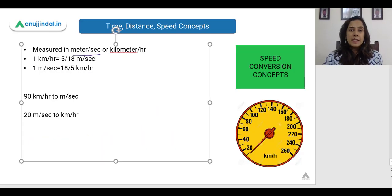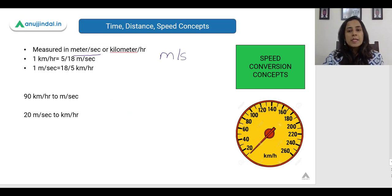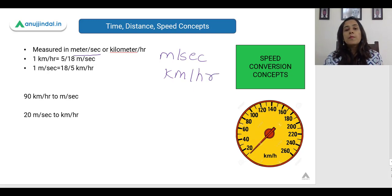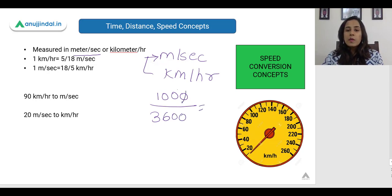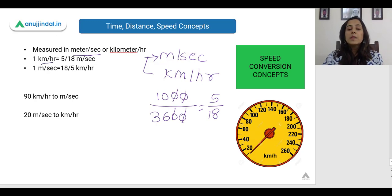Now we have speed. Speed is measured either in meters per second or kilometers per hour. To convert kilometers per hour to meters per second: 1 kilometer is 1000 meters and 1 hour is 3600 seconds. So we get 1000/3600, which simplifies to 5/18. So if we want to convert kilometers per hour to meters per second, we multiply by 5/18.